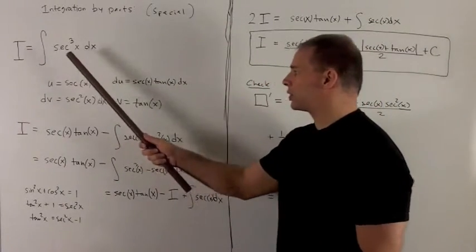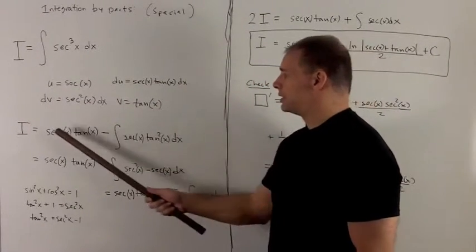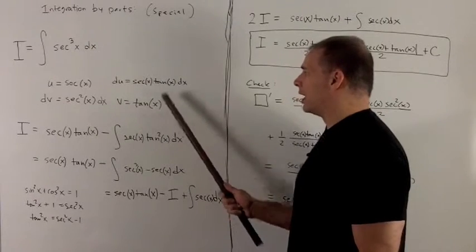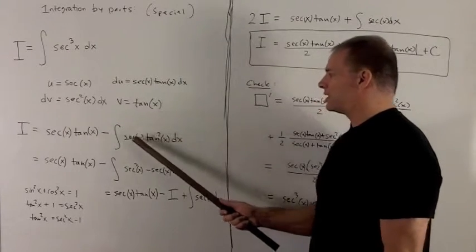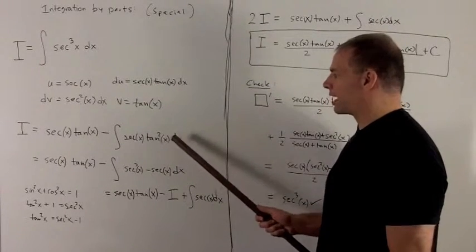So integration by parts says, go down the diagonal, secant tan, then we're going to integrate up the vertical with a minus sign in front. So we're going to integrate secant x tan squared x dx.